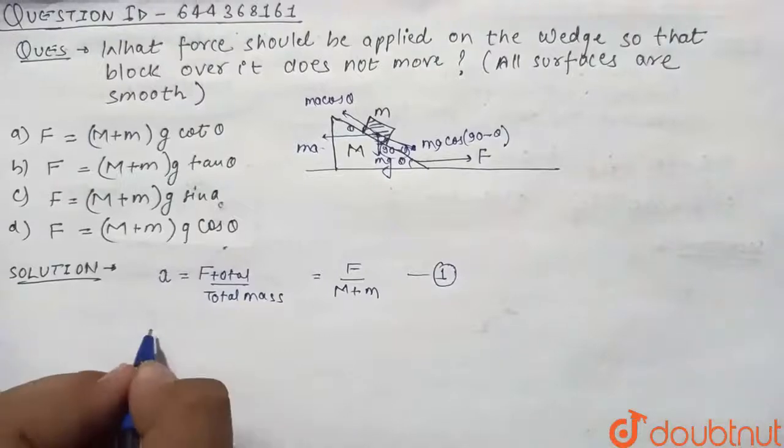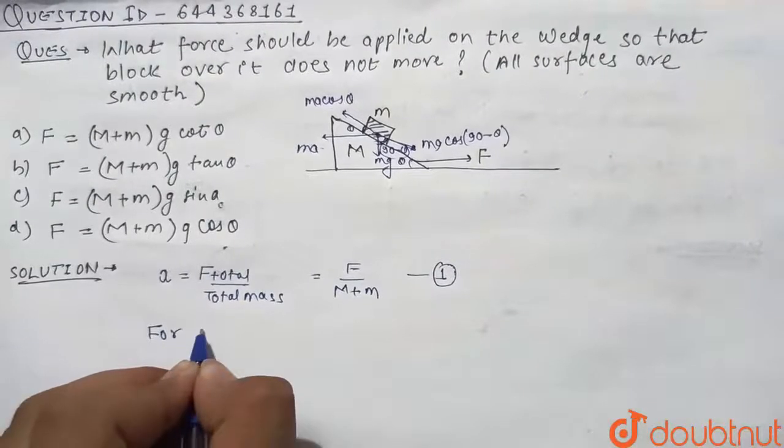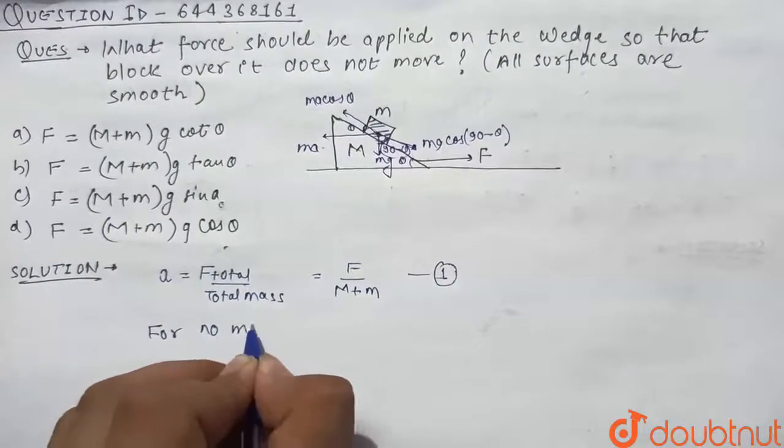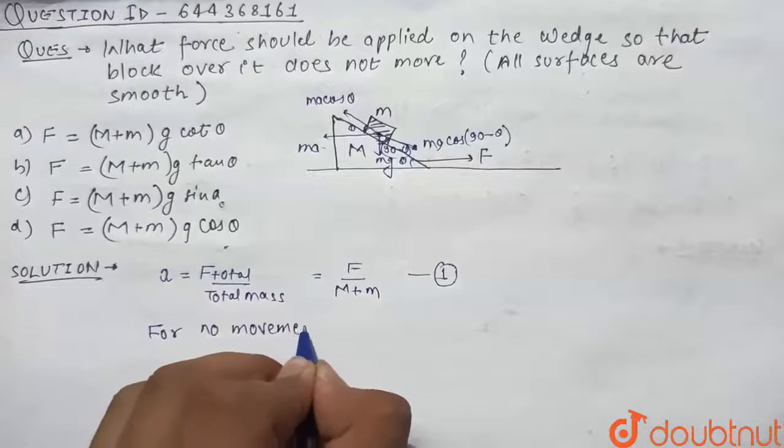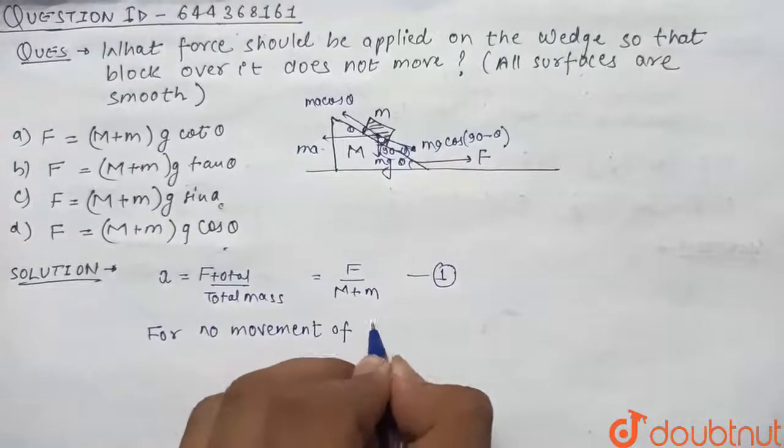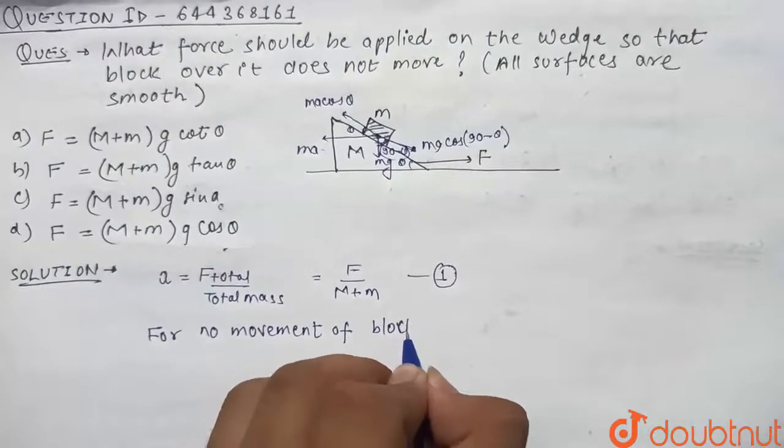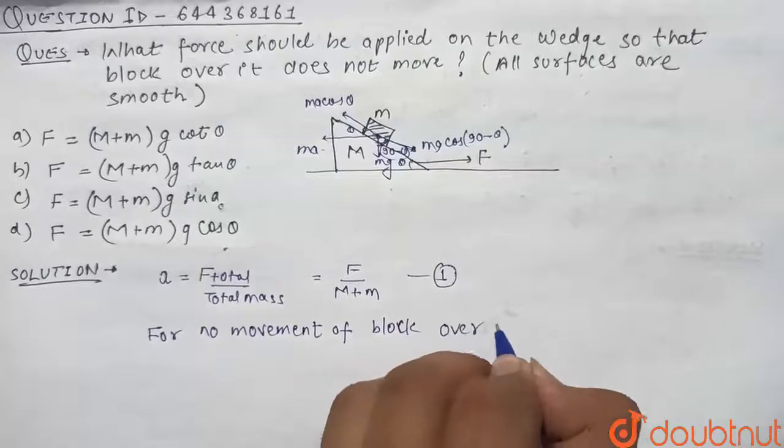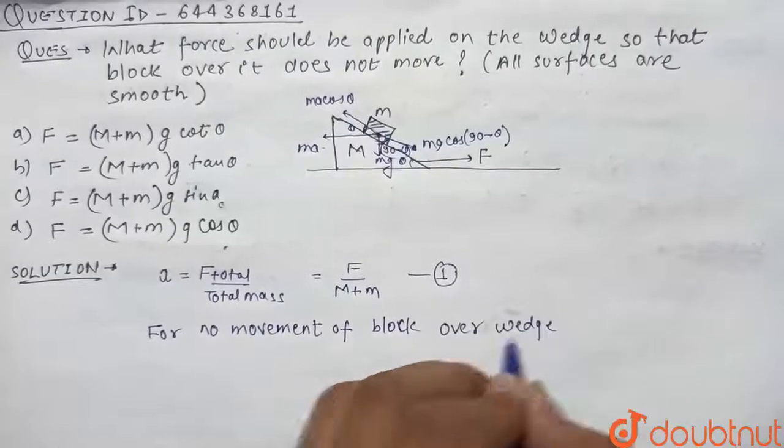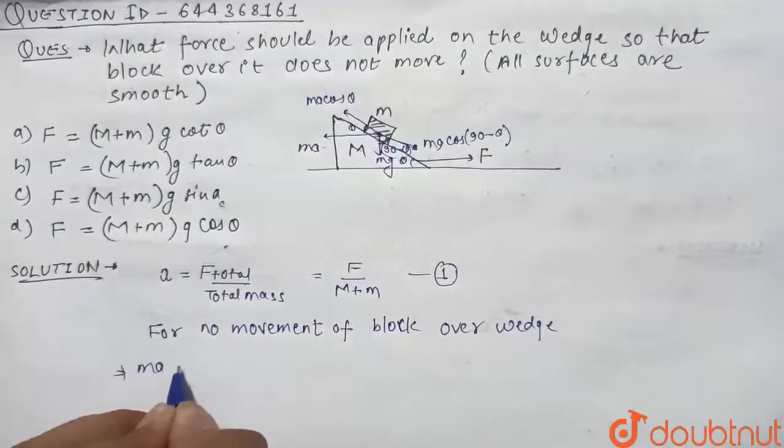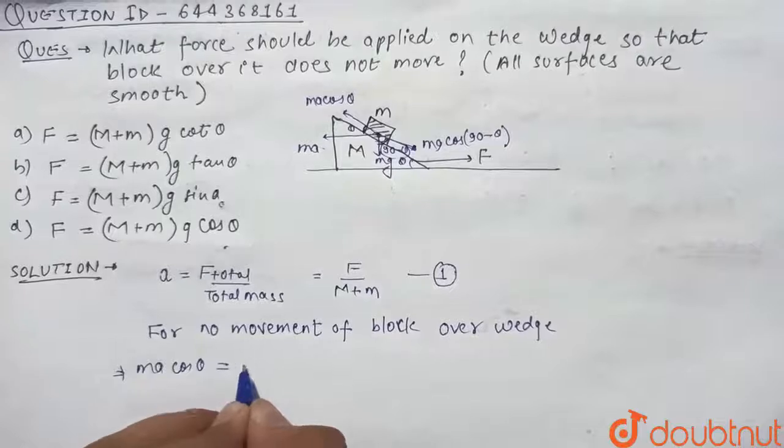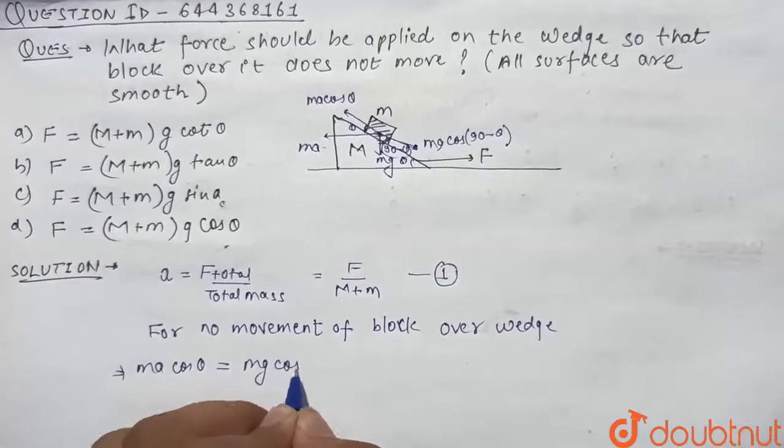So we can say here for no movement of block over wedge, ma cos theta should be equal to mg cos 90 minus theta.